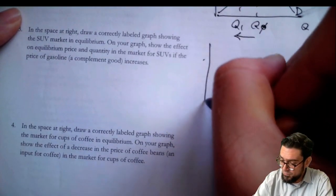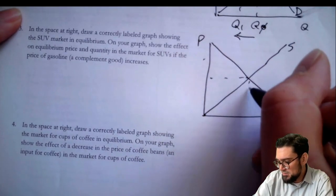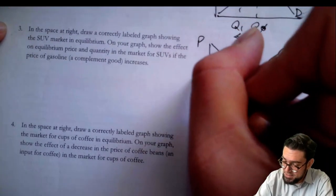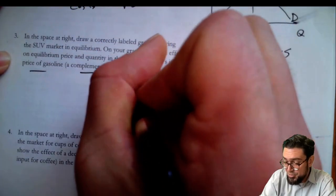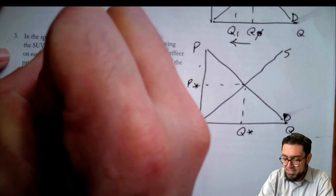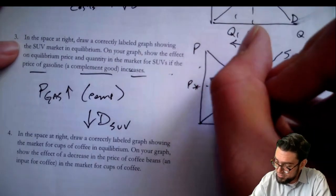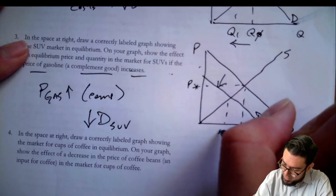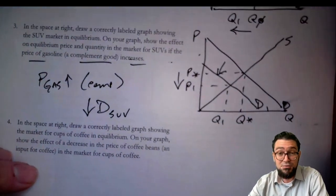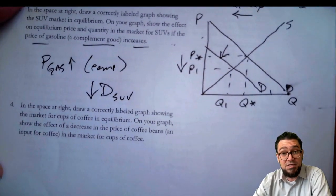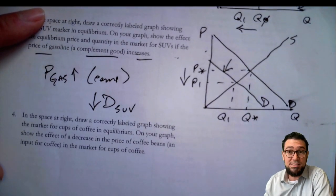Question three: draw a graph for SUVs in equilibrium — meaning there's no shortage or surplus. We'll use P*, Q*. Show the effect on equilibrium price if the price of gas, a complement good, goes up. That's going to be a demand shifter. The price of gas going up — and gas is a complement to SUVs — leads to less demand for SUVs. Shift the curve left to D1, giving us Q1 and a lower price for SUVs. In times of extended high gas prices, SUV sales fall and fuel efficient cars see higher demand, which is actually observed in real markets.